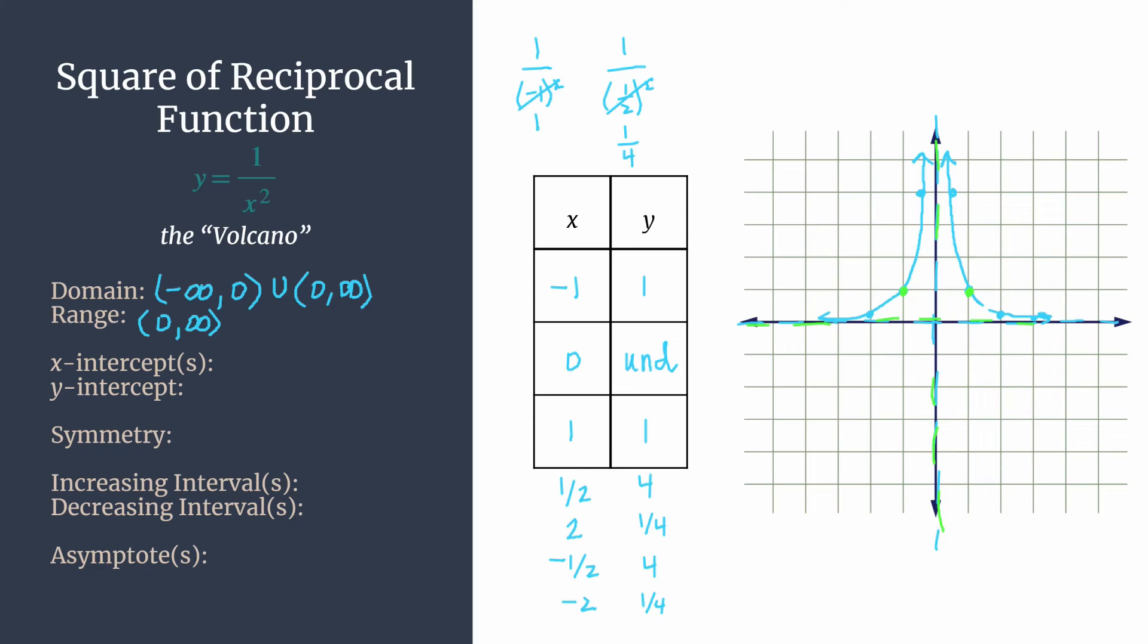All right. We see clearly there are no intercepts here, no x-intercepts, no y-intercepts. That was the same with our regular reciprocal graph as well. And it's because of those asymptotes.